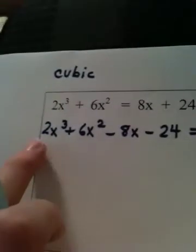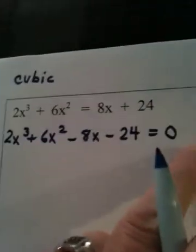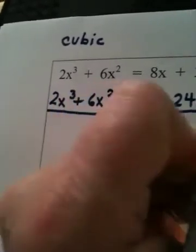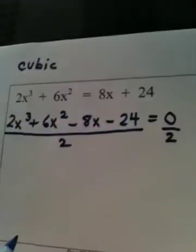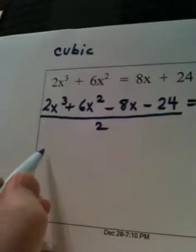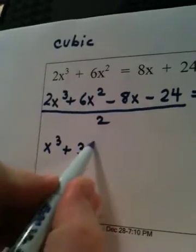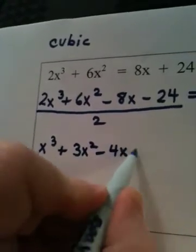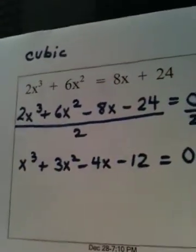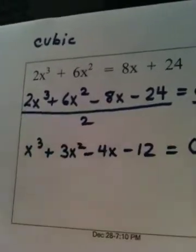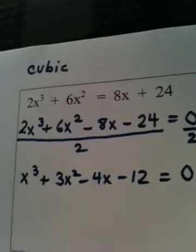The next thing I'm going to do is notice that everything is divisible by 2. So, I am going to divide everything by 2 to make the numbers in my equation simpler. That's going to give me x cubed plus 3x squared minus 4x minus 12 is equal to 0. Anytime you see a number that every term in an equation can be divided by, I think it's a smart idea to do it. It just makes things easier.